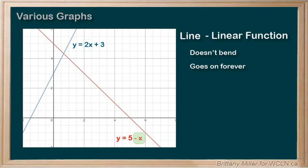If we have a negative instead, like in 5 minus x, it flips the line so that it goes down instead.